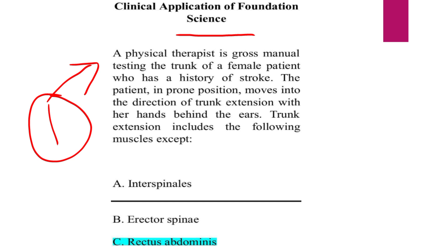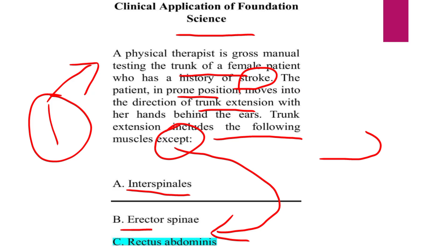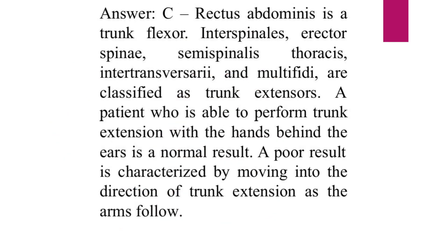MCQ #1: A physical therapist is performing gross manual muscle testing on the trunk of a female patient who has a history of stroke. The patient, in the prone position, moves into the direction of trunk extension with her hands behind the ears. Trunk extension includes the following muscles — except which? The answer is the rectus abdominis, which is not a trunk extensor. Intraspinalis and erector spinae are trunk extensors.